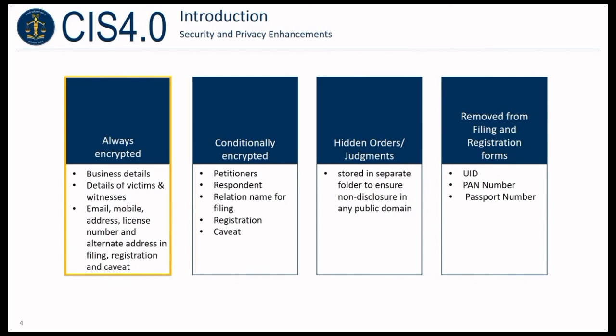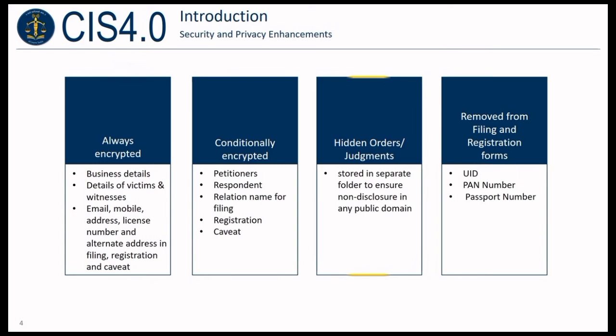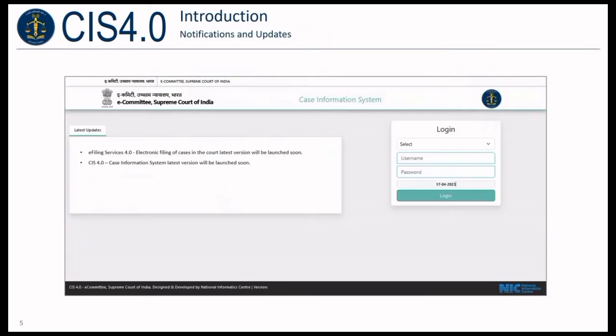Business details, details of victims and witnesses, email, mobile, address, license number, and alternate address in filing, registration, and caveat are now always encrypted. Petitioners, respondent, and relation name for filing, registration, and caveat are conditionally encrypted. Hidden orders and judgments are stored in a separate folder to ensure non-disclosure in any public domain. UID, pen number, and passport number are removed from filing and registration forms.